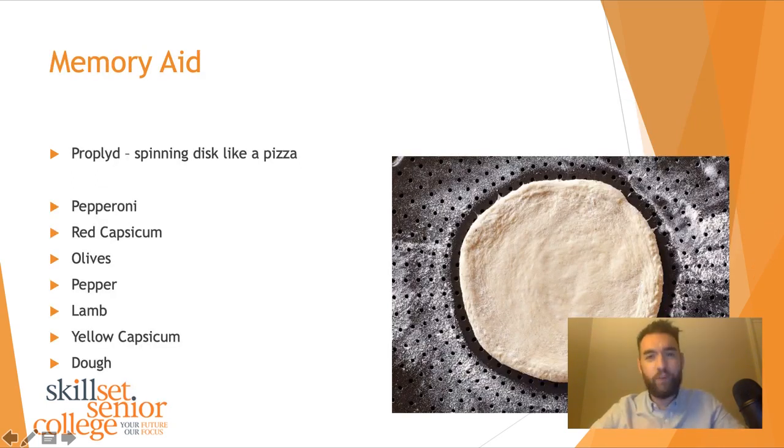I don't want you guys missing out just because we're online from any terrible memory aids that I can come up with. The way I like to think of these proplids is that somebody's making pizza. You see people spinning the pizza dough. It gets flatter and flatter the more they spin it. Proplids, my favourite kind of pizza, is made of pepperoni, red capsicum, olives, pepper, lamb, yellow capsicum and dough. That's not actually a good memory. That's just because I'm hungry for pizza. But proplid, if you remember in your head, we're talking about the spinning action, a flat spinning disk, kind of like a pizza.